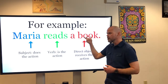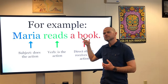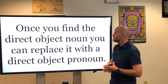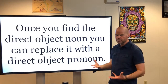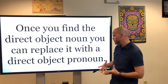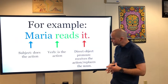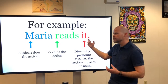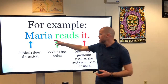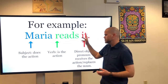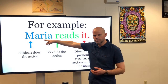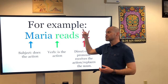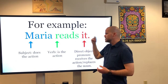Now we're going to take this direct object and replace it with a direct object pronoun. Once we find that direct object, we're going to replace it with the direct object pronoun. In English, that would be 'it', so 'it' is replacing 'a book'. Maria reads it. Maria is the subject, reads is the verb, and the direct object pronoun now is 'it'.